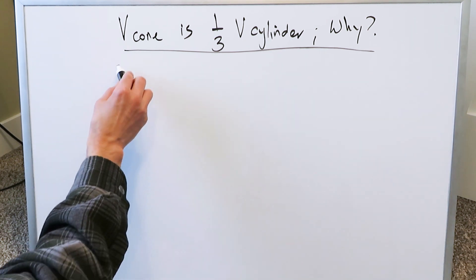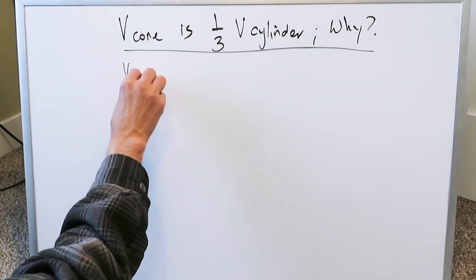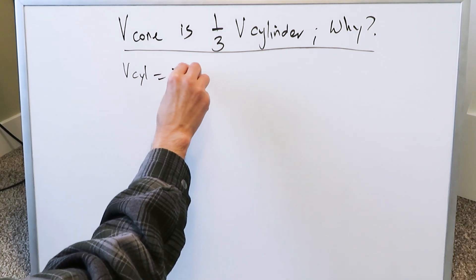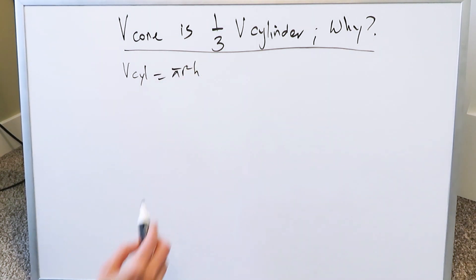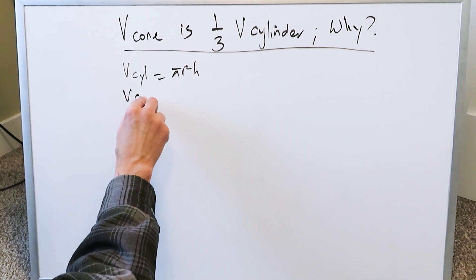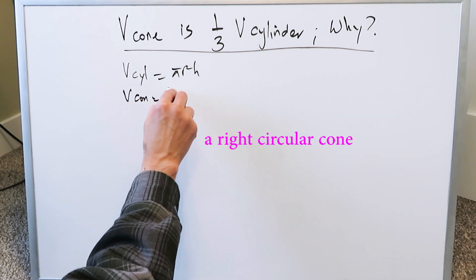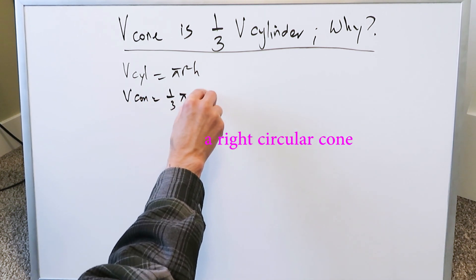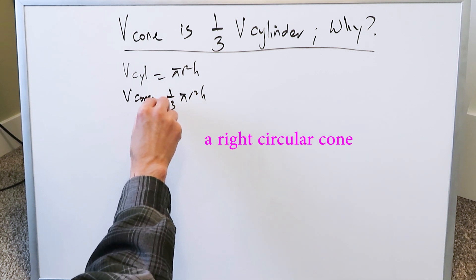If you know the volume of a cylinder is πr²h — we've established that in a previous derivation video — then the volume of a cone is (1/3)πr²h.